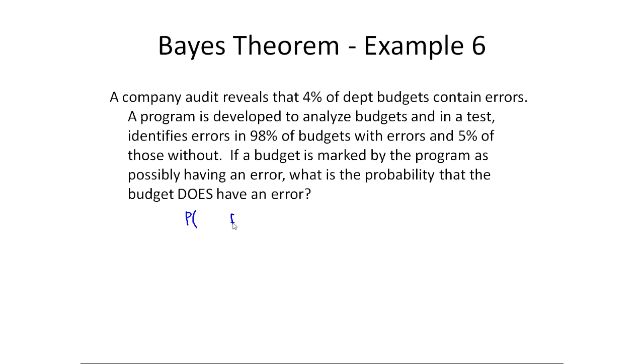So this is backwards because we know the end result. In other words, we know it was flagged as having an error, but we want to know what's probably it does in fact have an error, which it started out having an error. That was the first step, or not, and then it's either flagged or not.